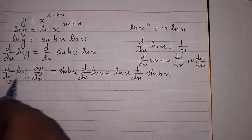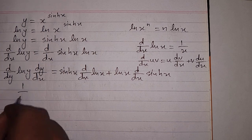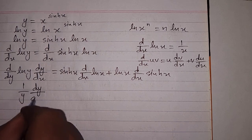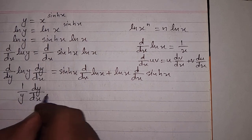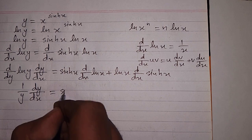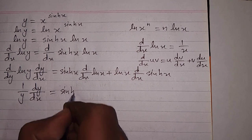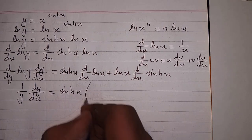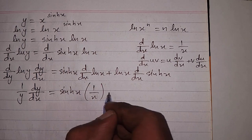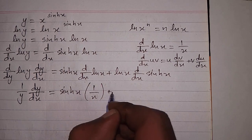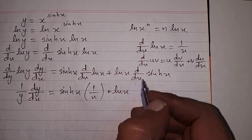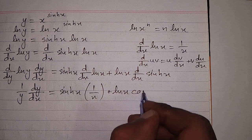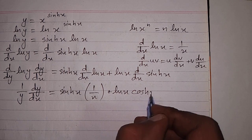The derivative of ln y is 1 upon y, multiplied by dy/dx, equals hyperbolic sin x. The derivative of ln x is 1 upon x, plus ln x. And the derivative of hyperbolic sin x is hyperbolic cos x.